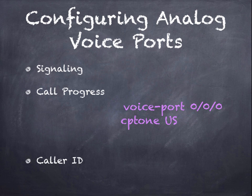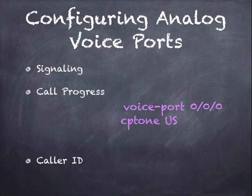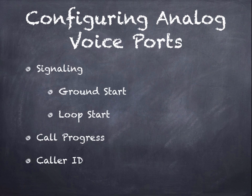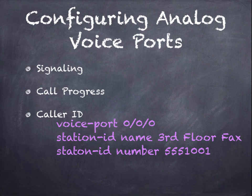Call progress is the type of tones that tell you the progress of the call — like a busy signal or a ring — and they are country-specific. You can see the commands for setting the call progress tones to United States. If you type a question mark after 'cptone', you can see the countries supported on your router. For caller ID, you simply give the port a name and a number, and when this port makes a call, it will provide that caller ID information to the receiving phone.